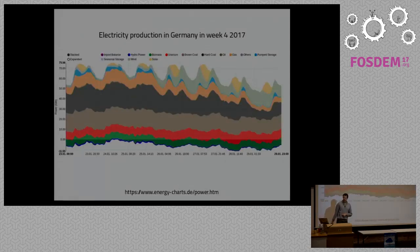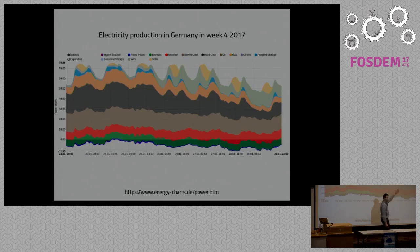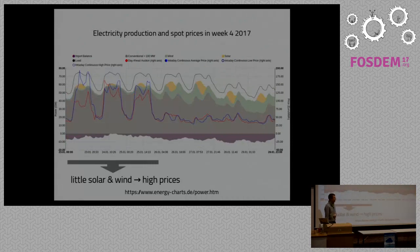This is a previous week in Germany. The orange peaks at the top are solar energy — at the beginning of the week there wasn't much solar and not much wind either, which is the greenish one. But at the end of the week, when there's less energy usage, there was more solar and more wind. To compensate, there was more coal and other fossil fuels being used at the beginning of the week.